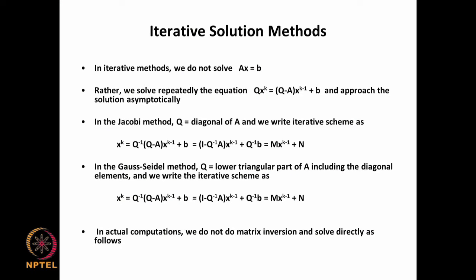We have seen that the solution of Ax = b or A-phi = b is not a trivial thing for CFD-type problems, because given the computational resources at our disposal, we tend to have a large number of grid points, and a large number of grid points means a large system of equations to be solved. So we need to be very careful in terms of what kind of methods we choose.